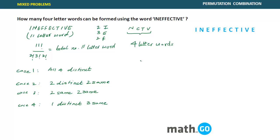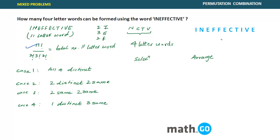Now let's solve each case, splitting into a selection component and an arrangement component. For case one — all four distinct — we first ask: how many distinct letters are there? There are a total of 11 letters in this word.